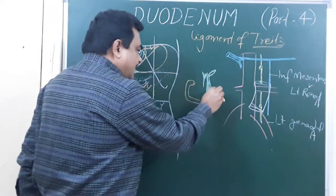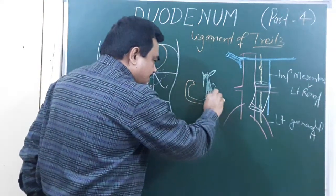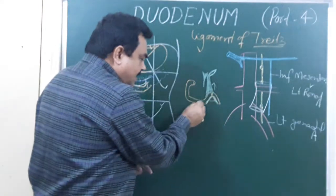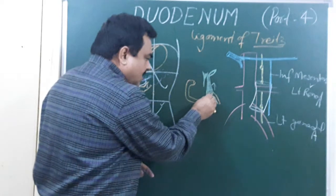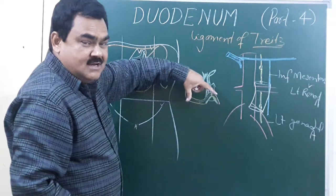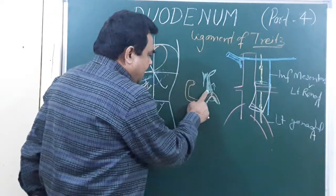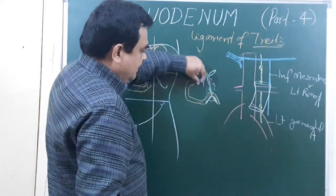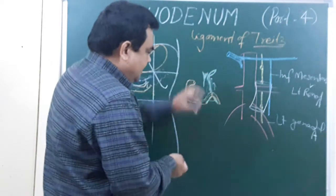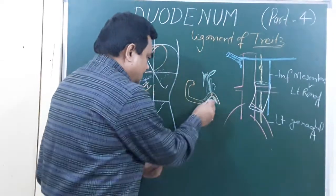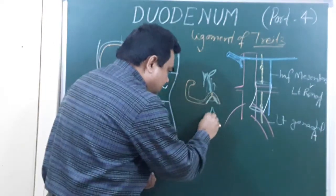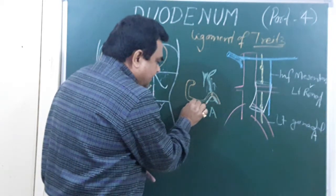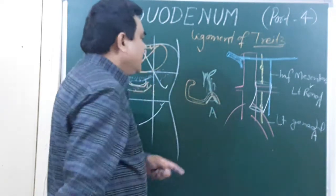The Ligament of Treitz attaches at the duodenojejunal junction. When it contracts, the angle between the fourth part of the duodenum and the jejunum increases — it widens — which facilitates easy passage of the bolus. However, if it is attached only at a single point and contracts, this angle becomes reduced, causing obstruction in the passage of the bolus. This is the clinical importance of the Ligament of Treitz.